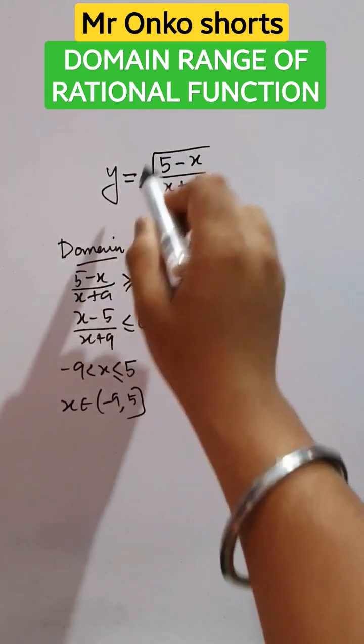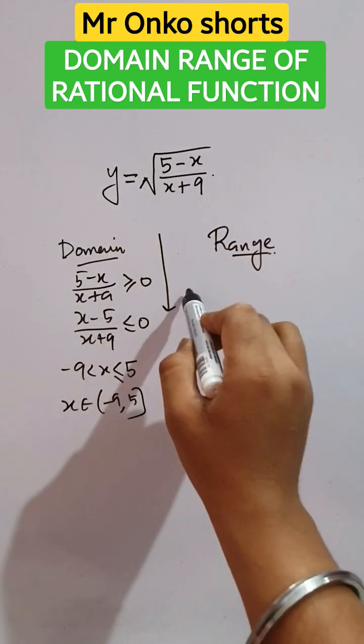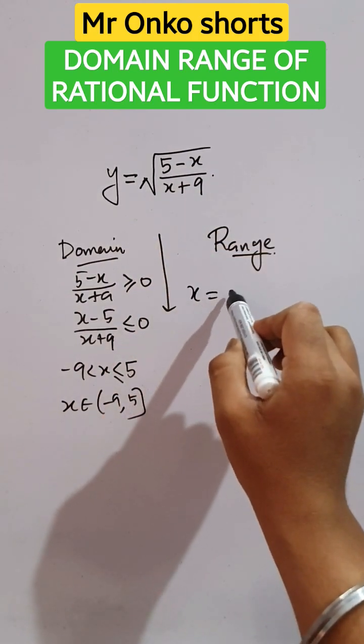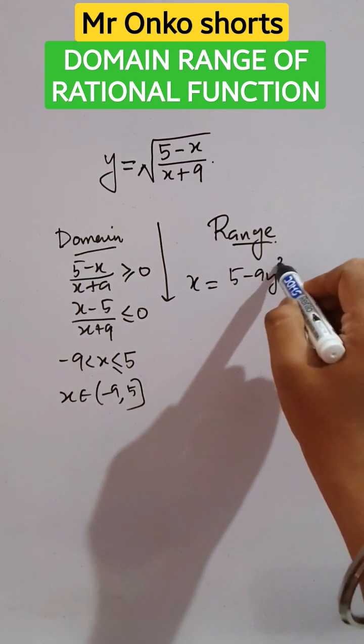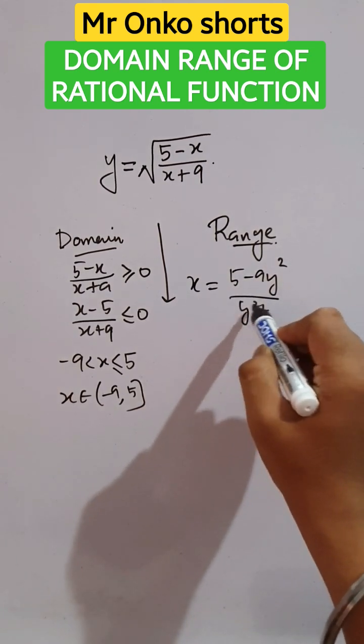Now for the range calculation, if we express this in terms of y, then x will be equal to five minus nine y squared divided by y squared plus one.